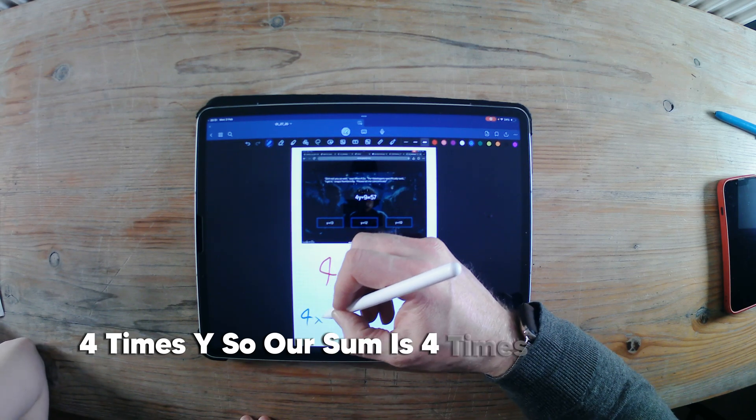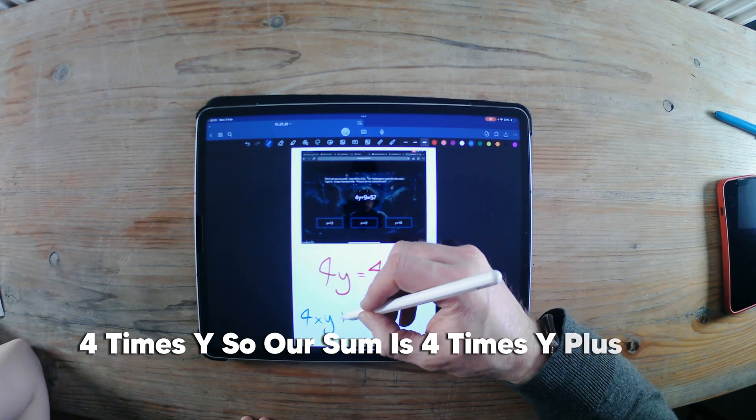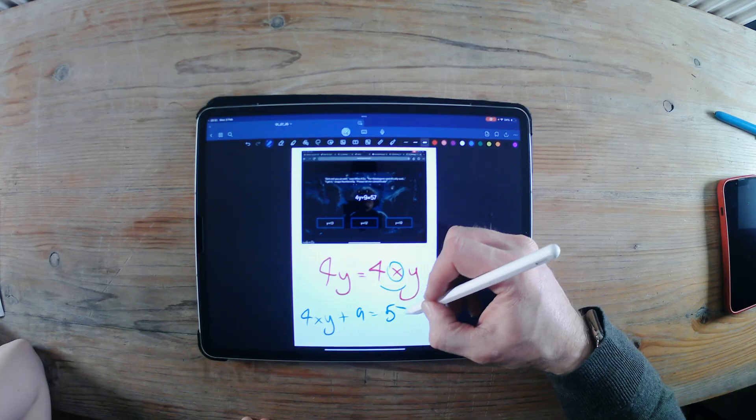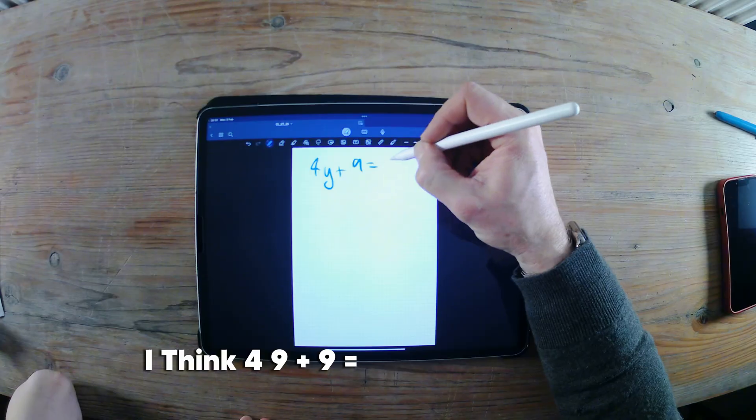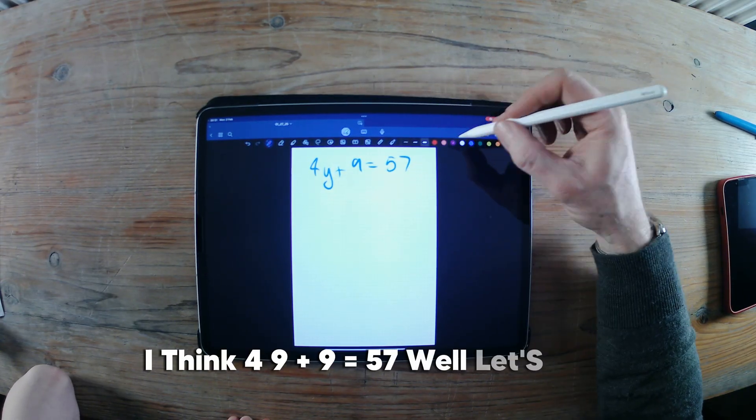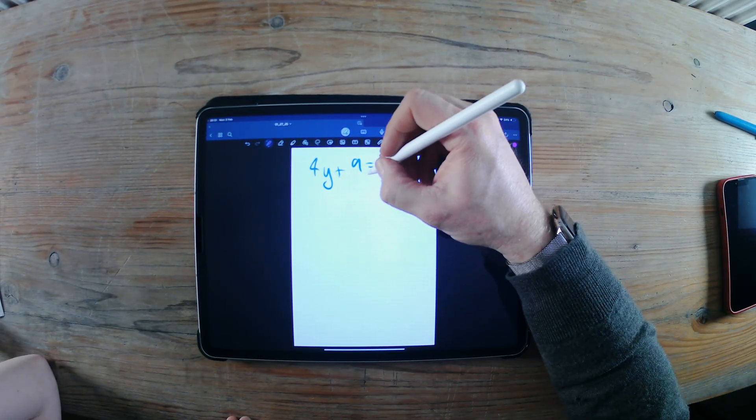So our sum is 4 times y plus 9 equals 57. Let's go to a refresh page. I think it's 12. 4y plus 9 equals 57. Well, let's just... No, it is... Let's refrain from guessing.